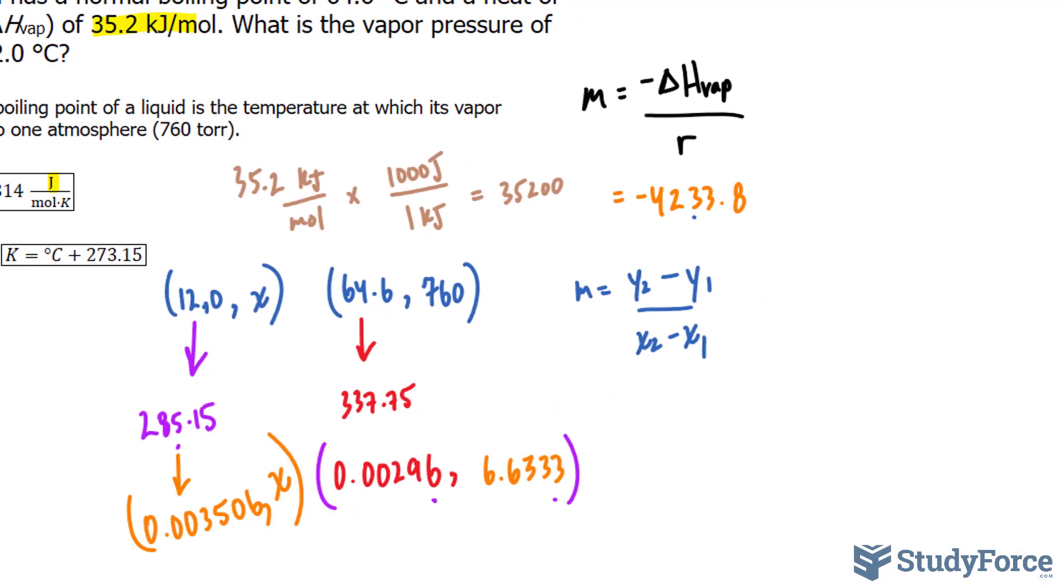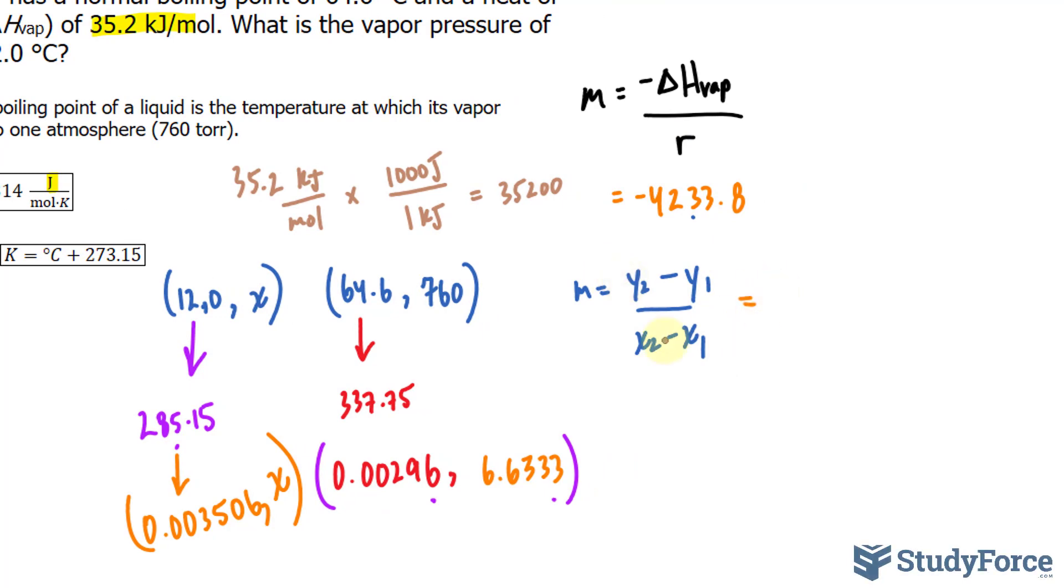Now let's substitute these numbers into this formula. y2 we don't know. In fact, this right here is y2, so I'll leave it as y2, minus y1, it was 6.6333, over this number 0.003506. And this number is 0.00296. All of this is equal to negative 4233.8, and we have to solve for y2.